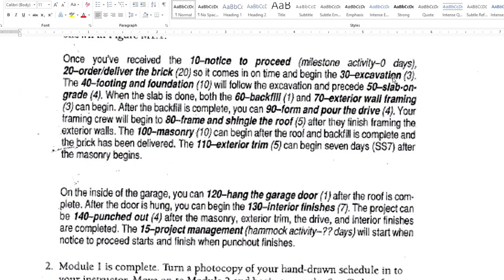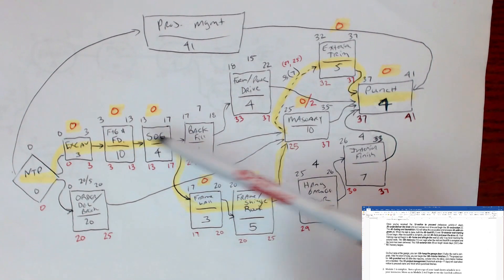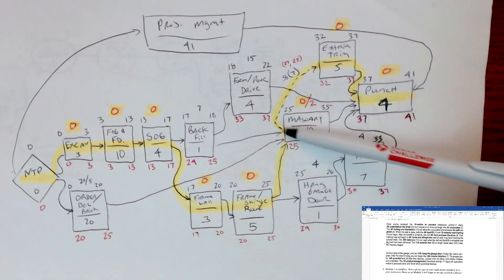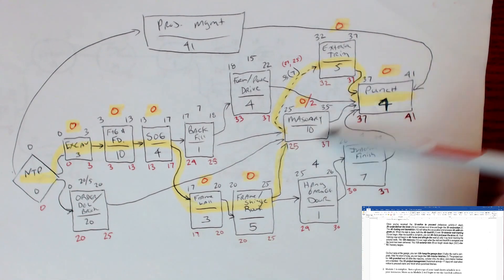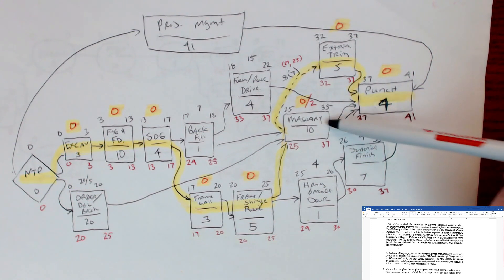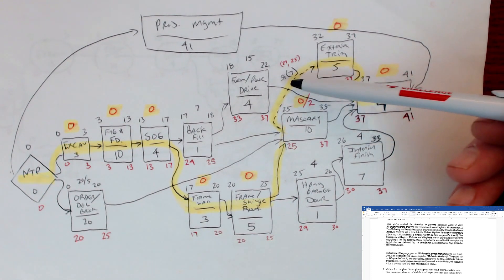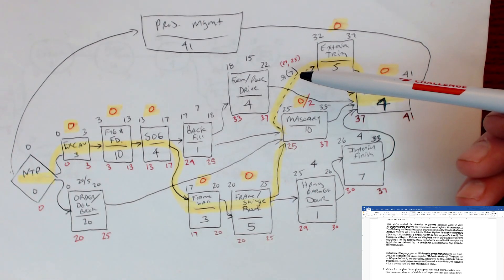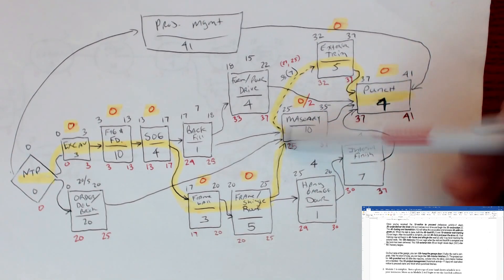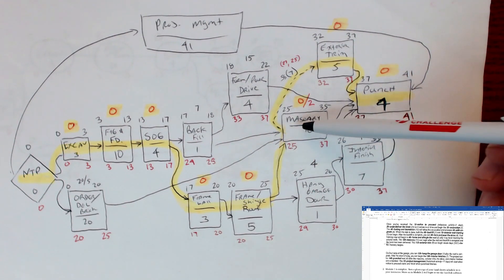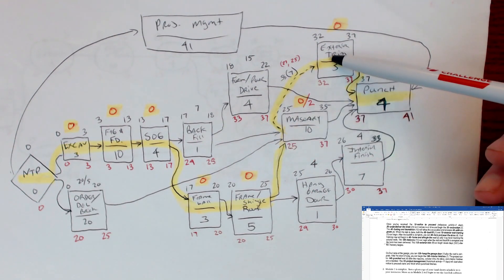So now we've got three activities going to masonry. The last sentence says the exterior trim can begin seven days after the masonry begins — that is a start-to-start relationship. All the other ones are finish to start, finish to start, finish to start. This one is start to start. When you're looking at one of these nodes, the front of it is the start and the back of it is the finish. We're going to use a dashed line to show that, with a seven-day lag.